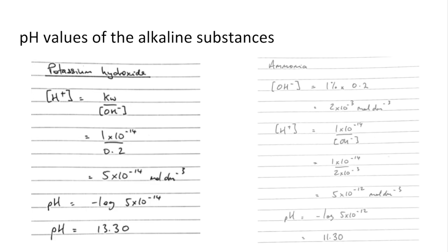And then for the ammonia, we'll have to use that information that it was only 1% dissociated. And so therefore, if the concentration of the ammonia was 0.2 moles per decimetre cubed, the OH minus ion concentration will be 1% of that. And then the calculation runs the same as the potassium hydroxide. So we're getting a pH of 11.30 for ammonia.